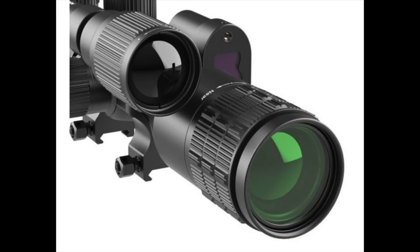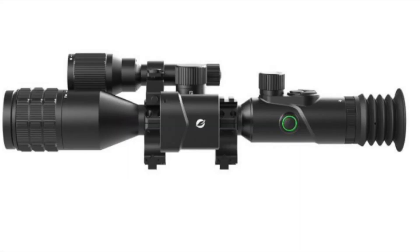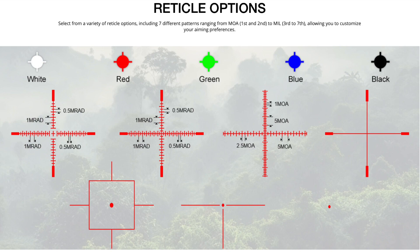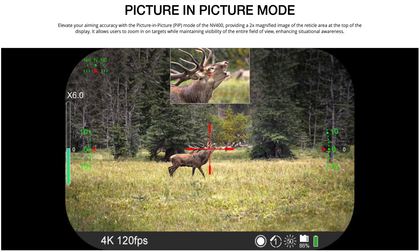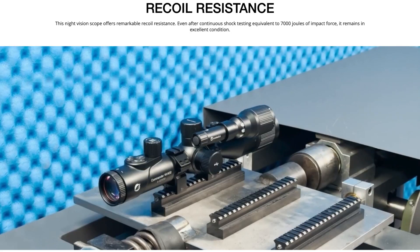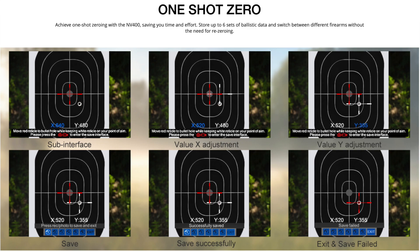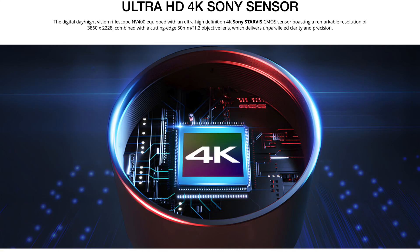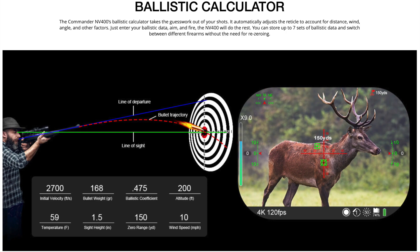The scope has been reviewed many times on various YouTube channels and I watched most of the reviews. But for what I do and how I do it, an infrared scope that can see in the dark but does not have a ballistic calculator is of no use to me. So why did I agree to review their scope? Because One Leaf have recently added a ballistic calculator to the Commander NV400 scope. And that, in my opinion, is a game changer.